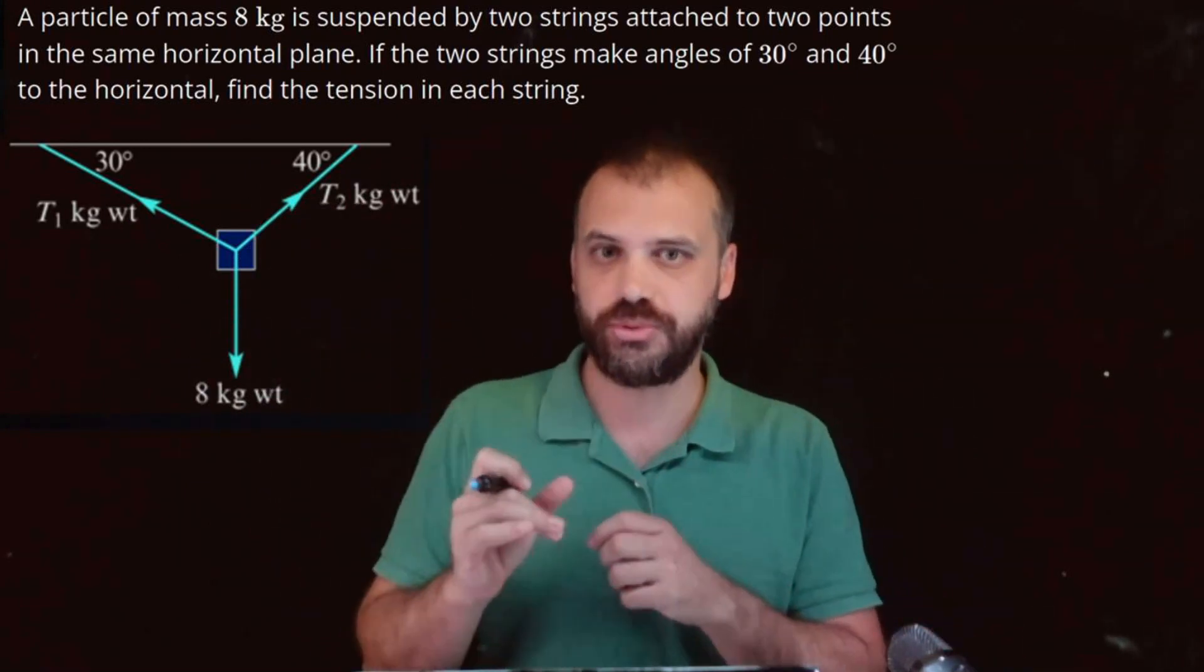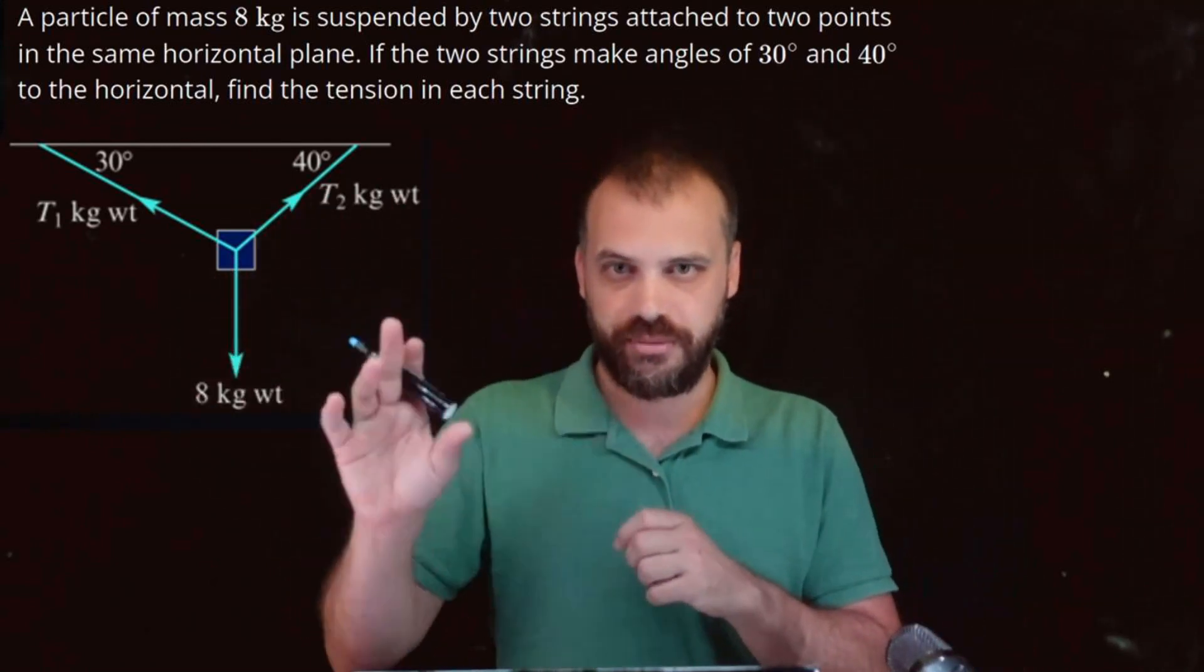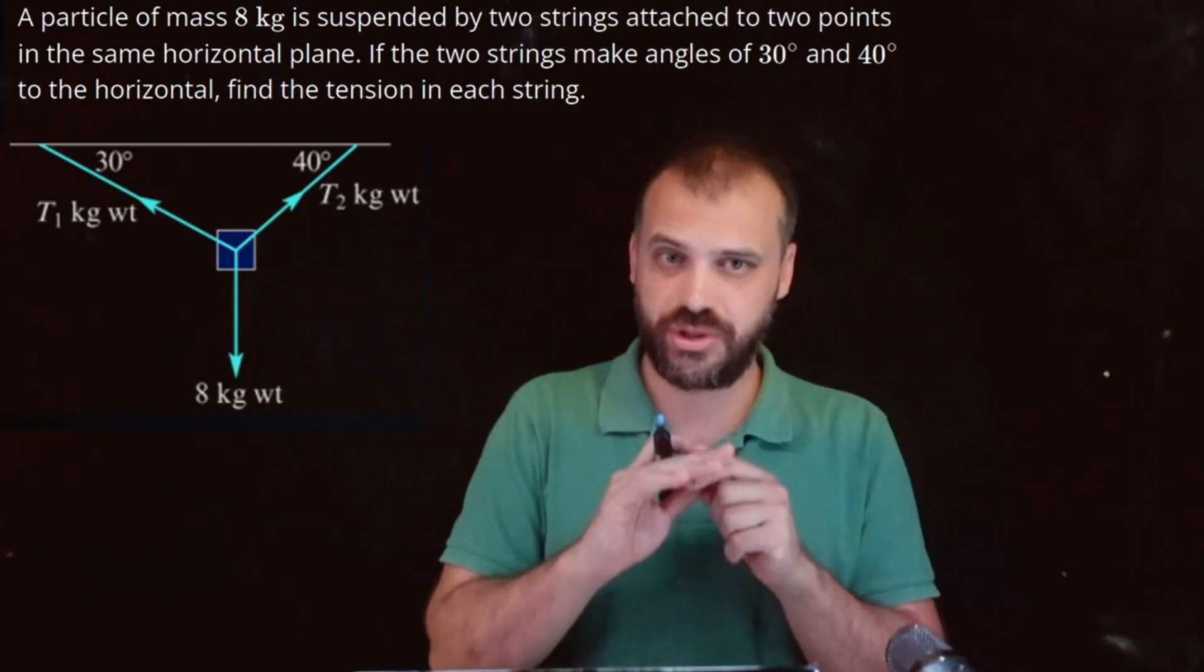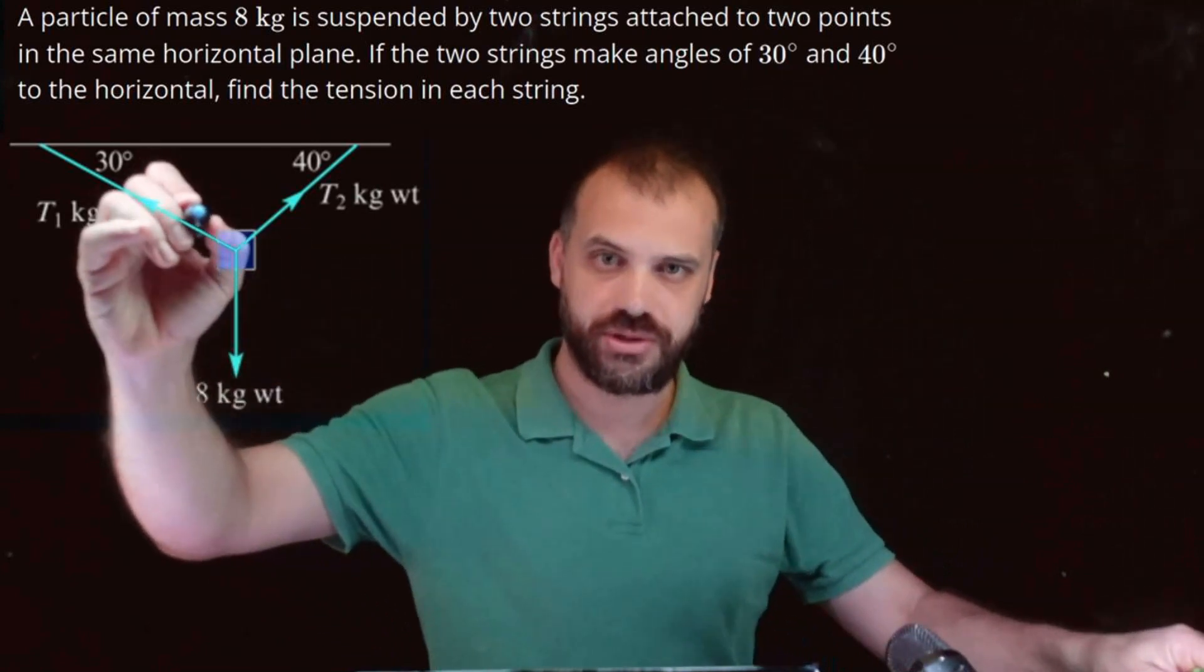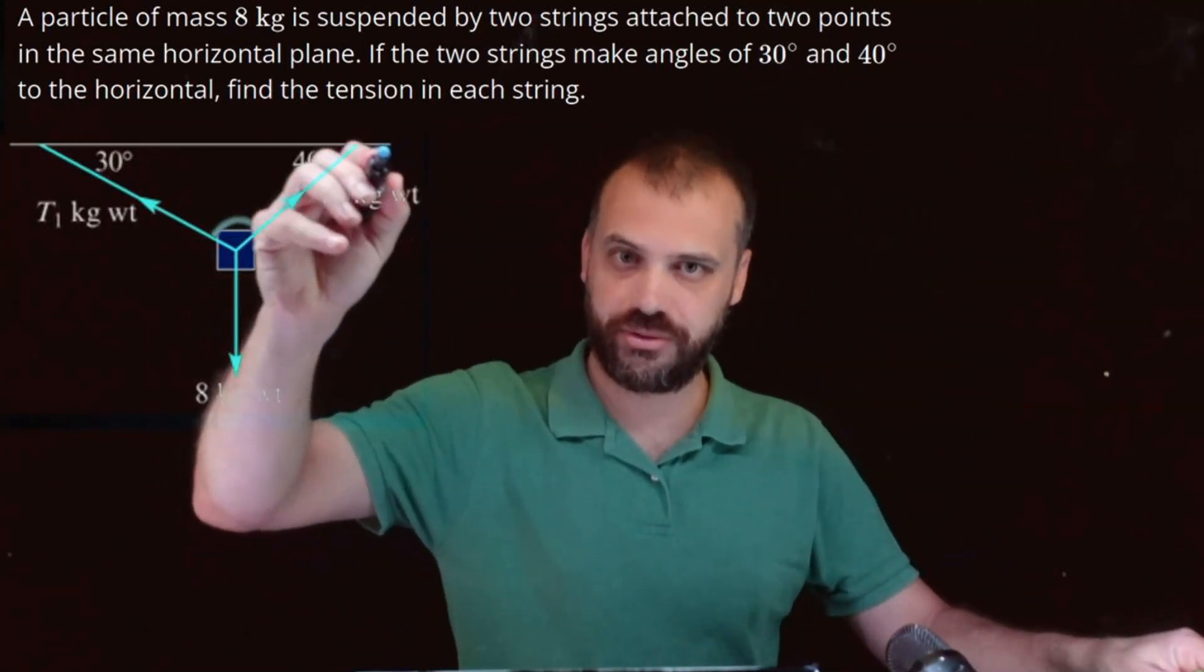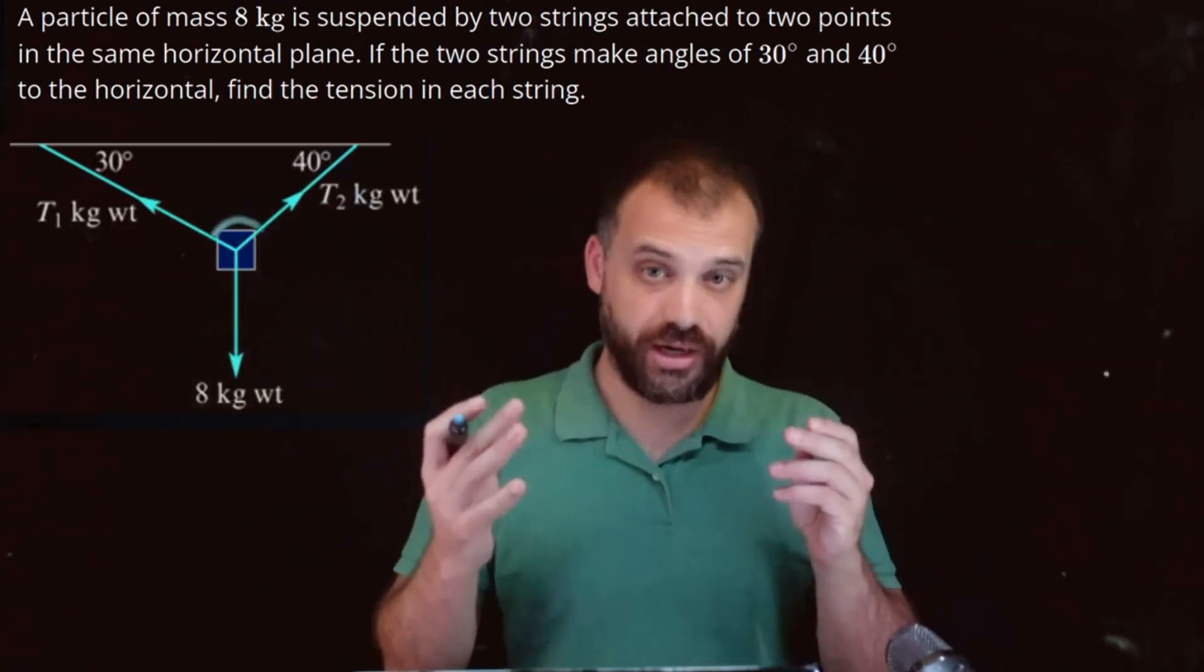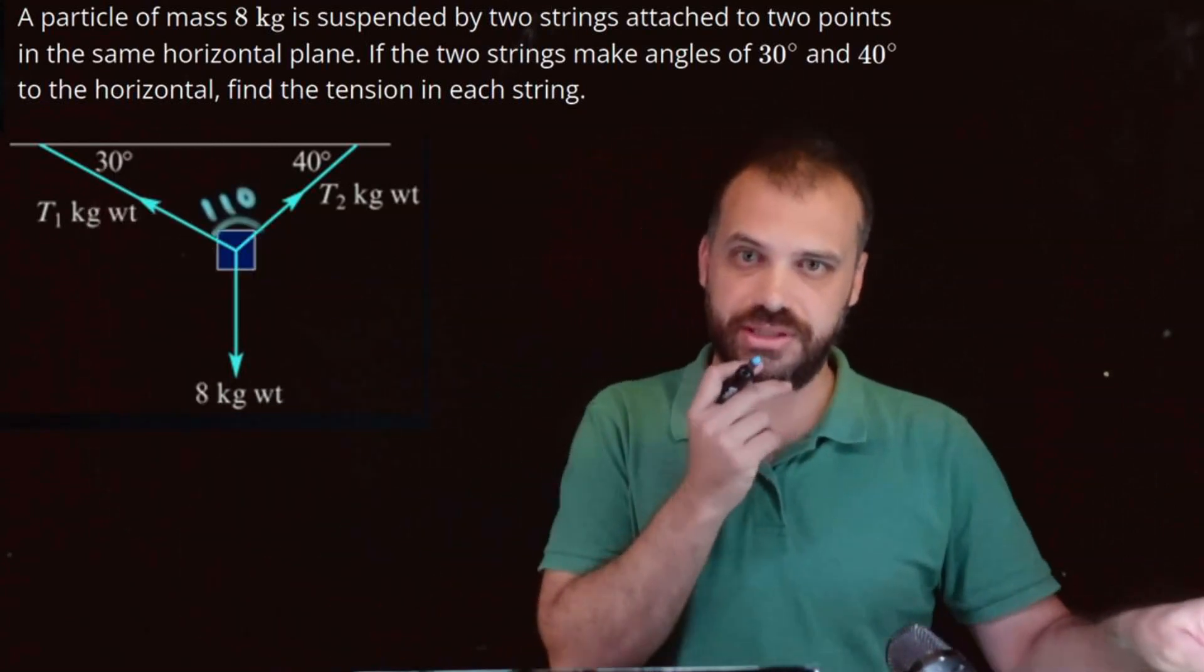So before I start turning this into a triangle, I think I want to know a few more of the angles in play. Because I only know one of the forces. So if I only know one of the forces, I really need to know all of the angles or I'm never going to get anywhere. So this angle here, we can see we have a triangle there. So 180 minus 30 plus 40, so 180 minus 70. That's 110 degrees there.